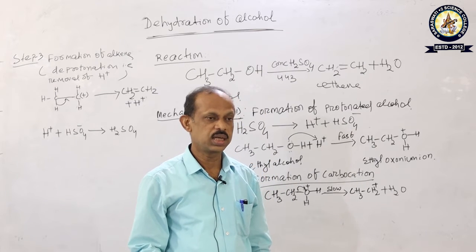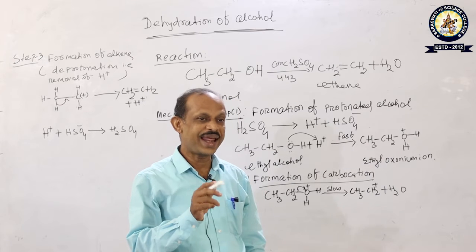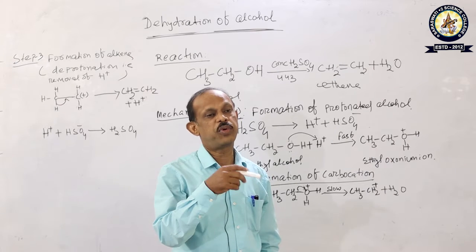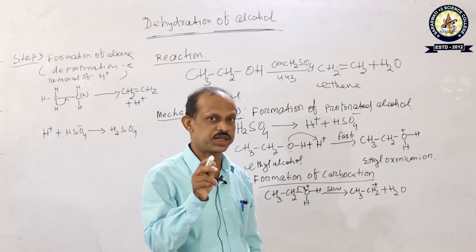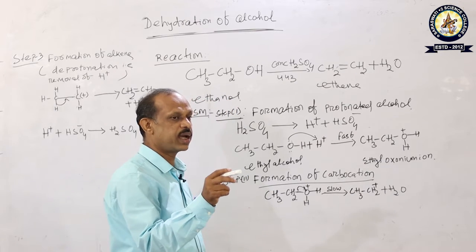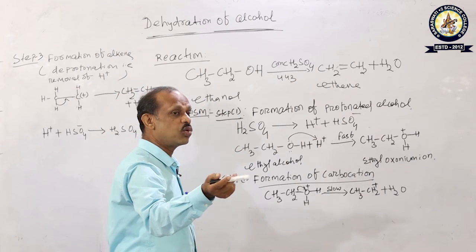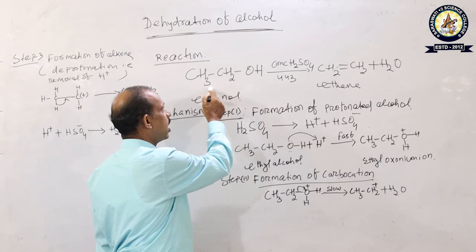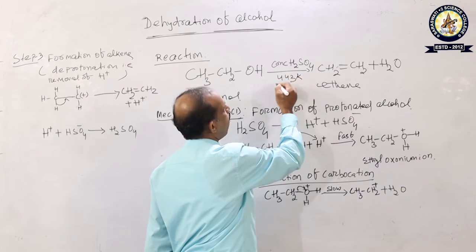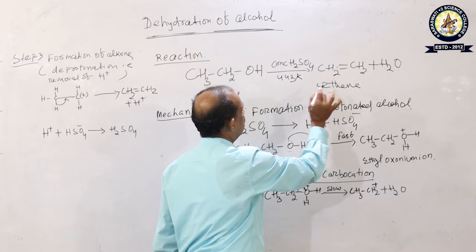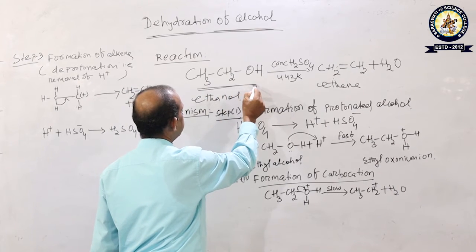Today we will discuss the mechanism — how the reaction proceeds and how we get alkene from alcohol. The mechanism of the formation of alkene from alcohol takes place in three steps. For example, dehydration of ethanol in the presence of concentrated sulfuric acid at 443 Kelvin leads to the formation of ethene and water.